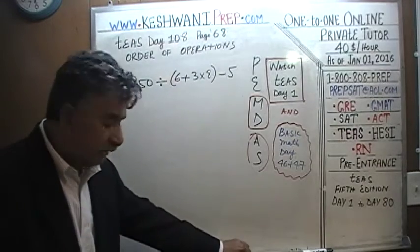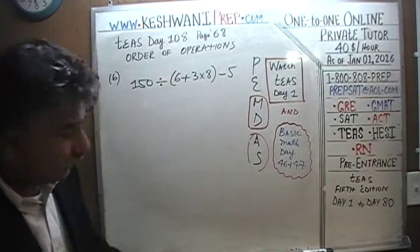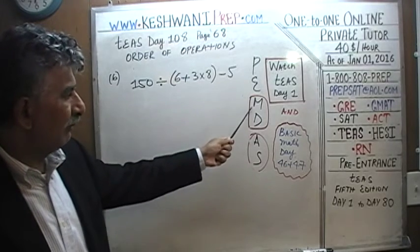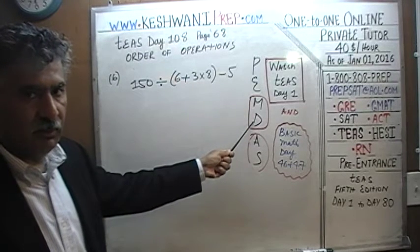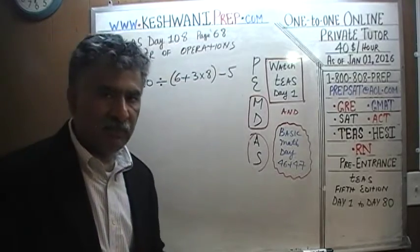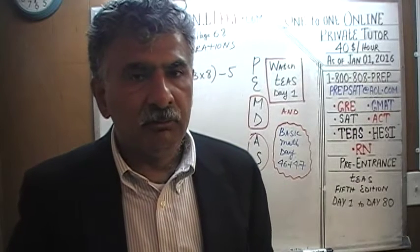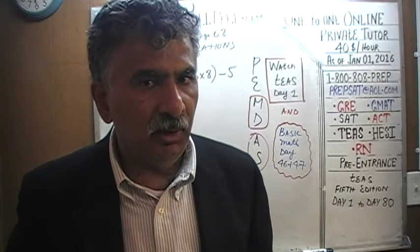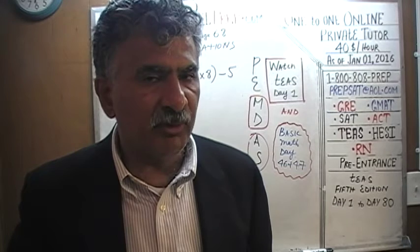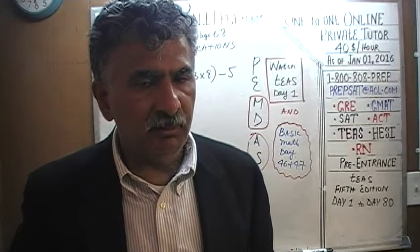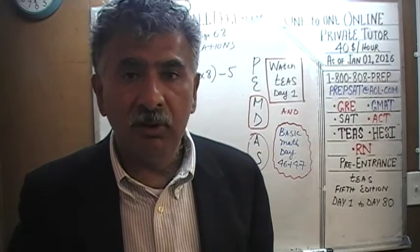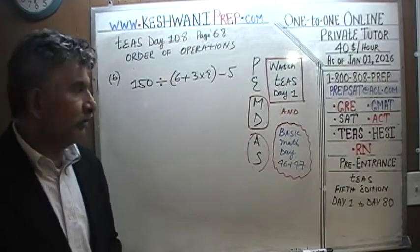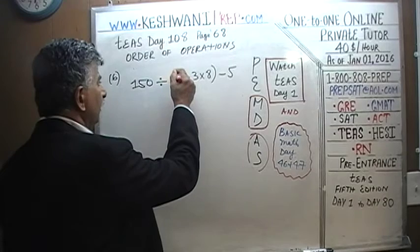The very first thing we have to understand is the order in which we are supposed to operate. Parentheses first, then the exponent, then multiplication and division, then addition and subtraction. Multiplication and division have the same preference — the same importance. Addition and subtraction have the same status, same importance. So if an expression involves both addition and subtraction, the rule is that you must go from left to right. Same thing with multiplication and division — go left to right. But first thing first, we have to take care of the parentheses first.